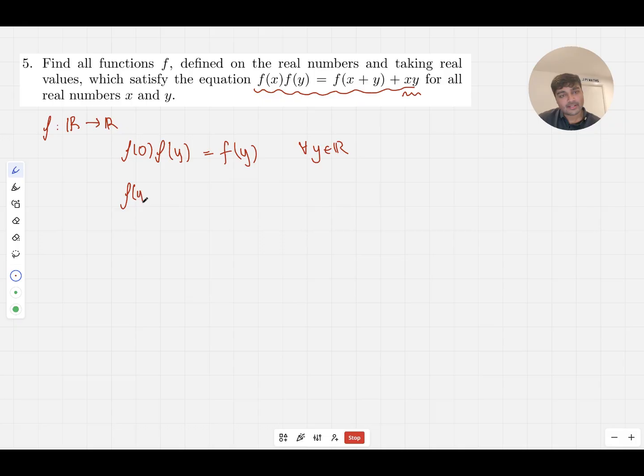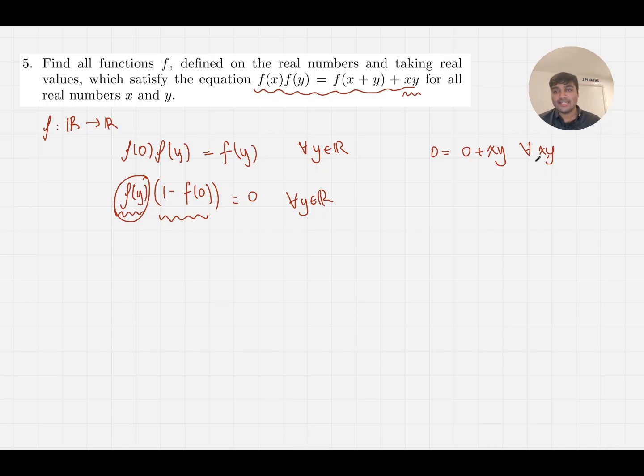This gives two possibilities. If I bring everything to one side and factor out f(y), I get [1 - f(0)]f(y) = 0 for all real numbers y. Either f(y) is zero for every single real number y, or f(0) equals one. It turns out that the first case of f(y) equaling zero is impossible because if f was the constant zero function, substituting back into the equation gives 0 = 0 + xy for all real numbers x and y. But obviously that's not true. If I choose x and y to be two positive real numbers, xy will be positive and this equation will break. So it's impossible for f to be zero everywhere. Thus, we must have that f(0) is one.